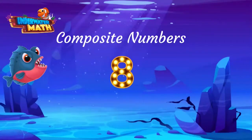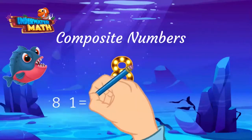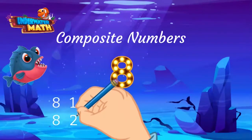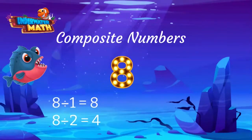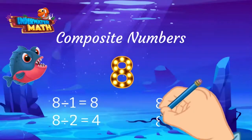Composite numbers are also numbers that are divisible by more than two numbers. The number eight is also divisible by 1, 2, 4, and 8.